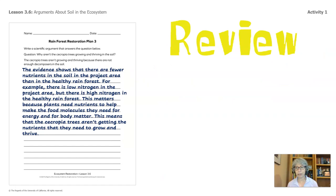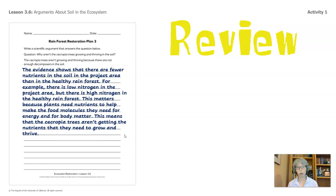All right, let's review. Here we have a sample. The evidence shows that there are fewer nutrients in the soil in the project area than in the healthy rainforest. For example, there is low nitrogen in the project area, but there is high nitrogen in the healthy rainforest. This matters because plants need nutrients to help make the food molecules they need for energy and for body matter. This means that the cecropia trees aren't getting the nutrients that they need to grow and thrive.